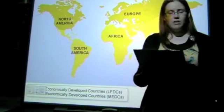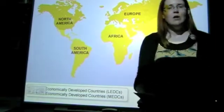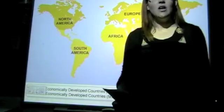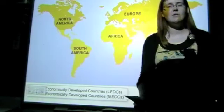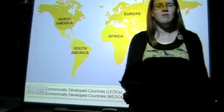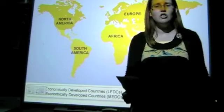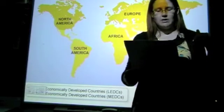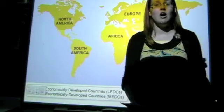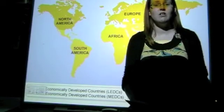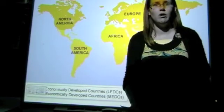Within places, we have a core region and a periphery. The core regions tend to be our urban areas — they're richer — and our periphery regions tend to be our rural areas, which are poorer.